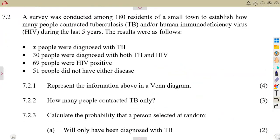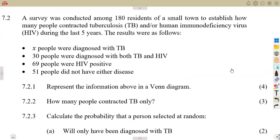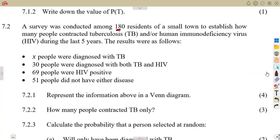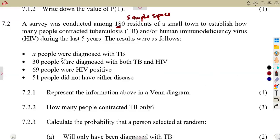Question 7.2. A survey was conducted among 180 residents of a small town — these are the number of people representing our sample space. Everything that you are given establishes how many contracted tuberculosis (TB) or the human immunodeficiency virus (HIV) during the last five years. The results were as follows: X people were diagnosed with TB, 30 diagnosed with both TB and HIV, and so on.